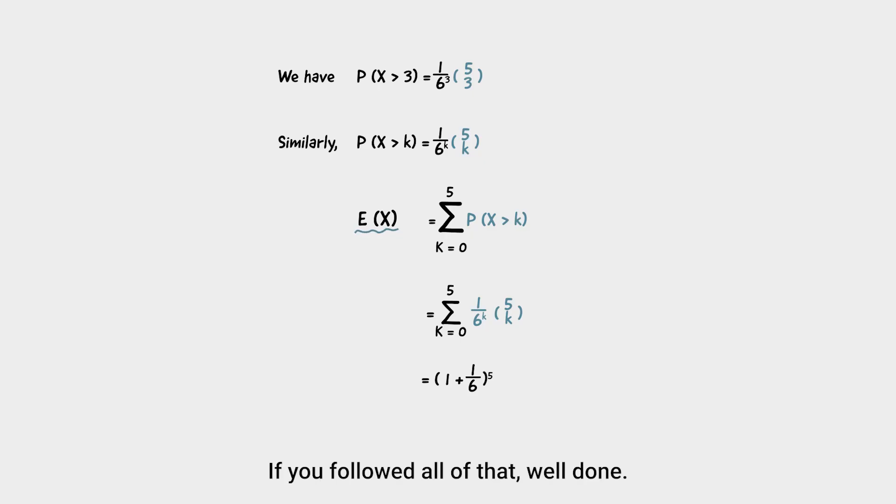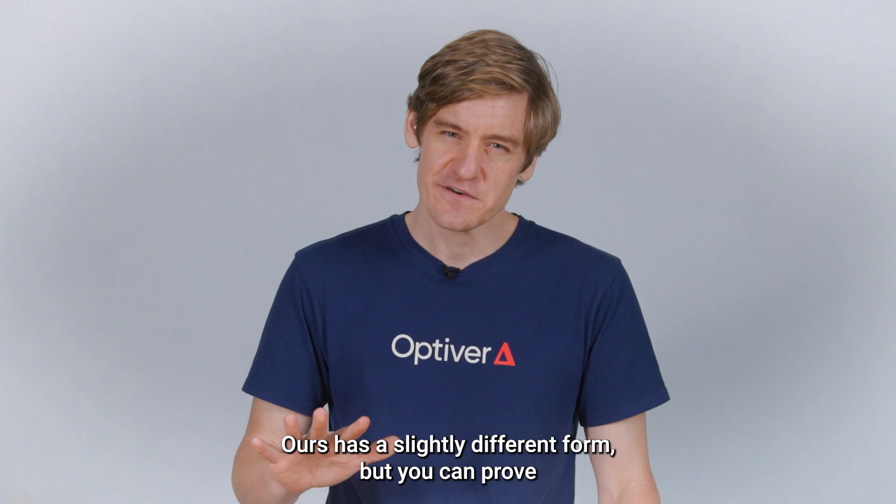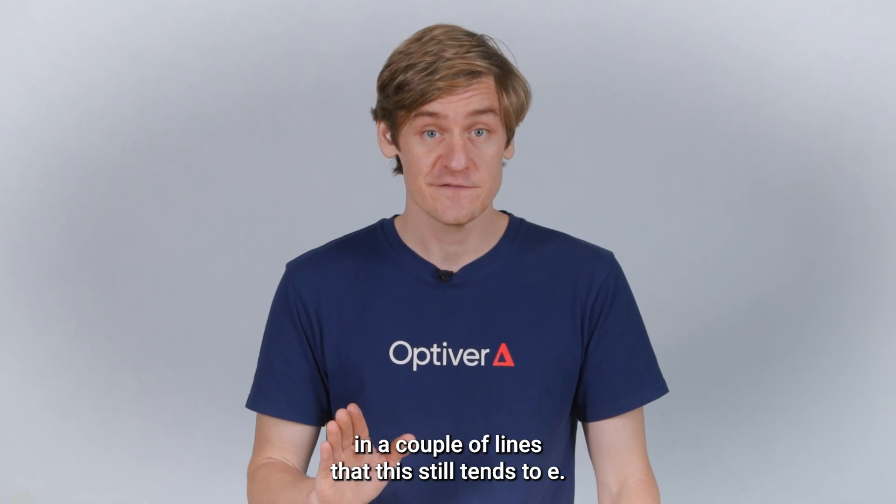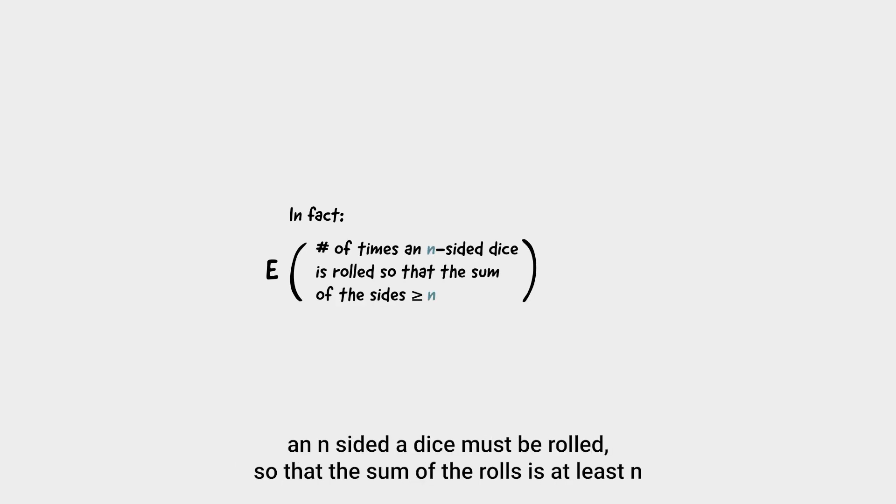Okay, if you followed all of that, well done. And if your curiosity has flared up looking at this expression, then well done again, because it looks very close to the form one plus one on n, all to the power of n, which many of you know tends to e, the exponential number as n tends to infinity. Okay, ours has a slightly different form, but you can prove in a couple of lines that this still tends to e. And actually, you can use what we've learned today to show that the expected number of times an n-sided dice must be rolled, so that the sum of the rolls is at least n, is equal to one plus one on n, all to the power of n minus one.